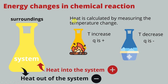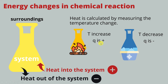When we look at heat, we can calculate it from measuring the temperature change. If your system is heated, the temperature of the system increases, so Q is positive. If the system is cooled down, the temperature of the system decreases, which means Q is negative. Q positive means heat comes into the system; Q negative means heat is out of the system.